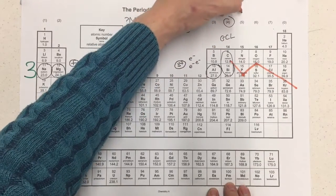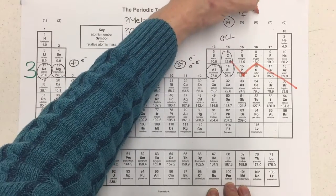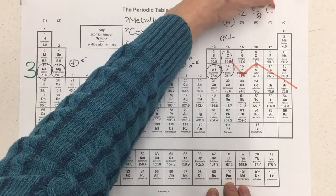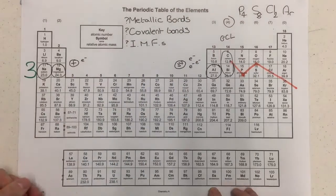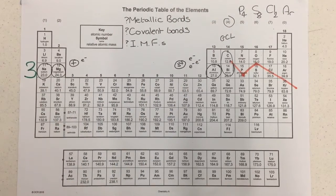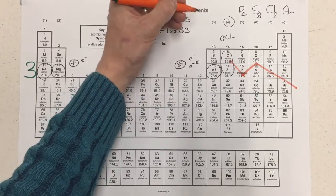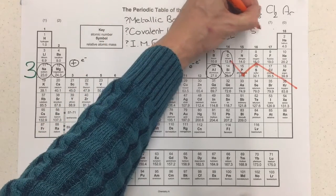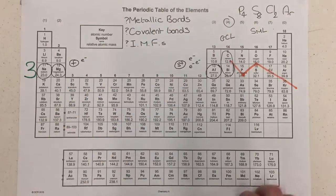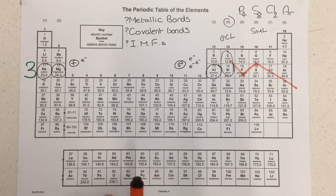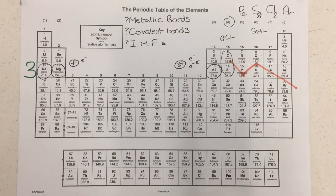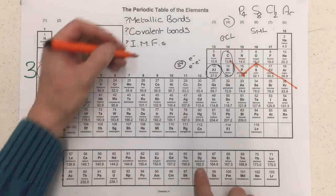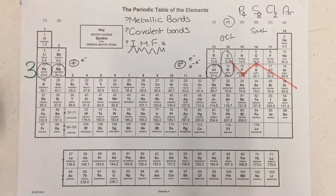Phosphorus is P₄, sulfur is S₈, chlorine is Cl₂, and argon is just Ar. These fall into the category of the simple molecular lattice. What we have most importantly are intermolecular forces — specifically the London intermolecular force. Within, for example, the P₄ molecule, we've got strong covalent bonds, but when we melt or boil it, we actually have to break just the intermolecular forces.